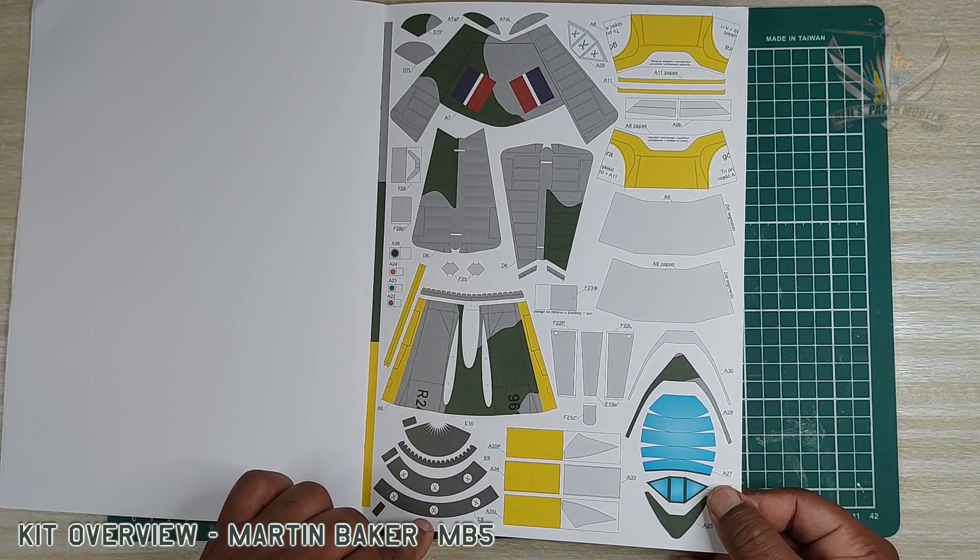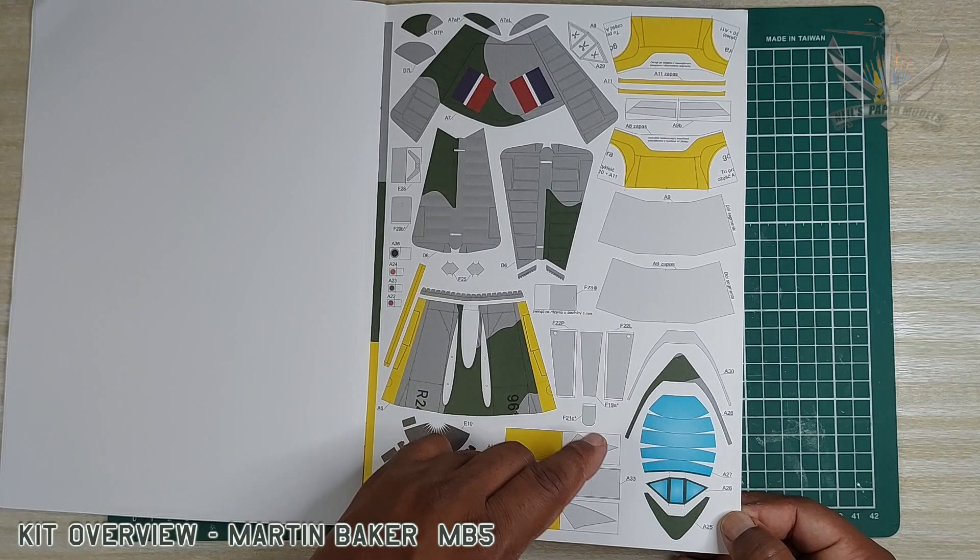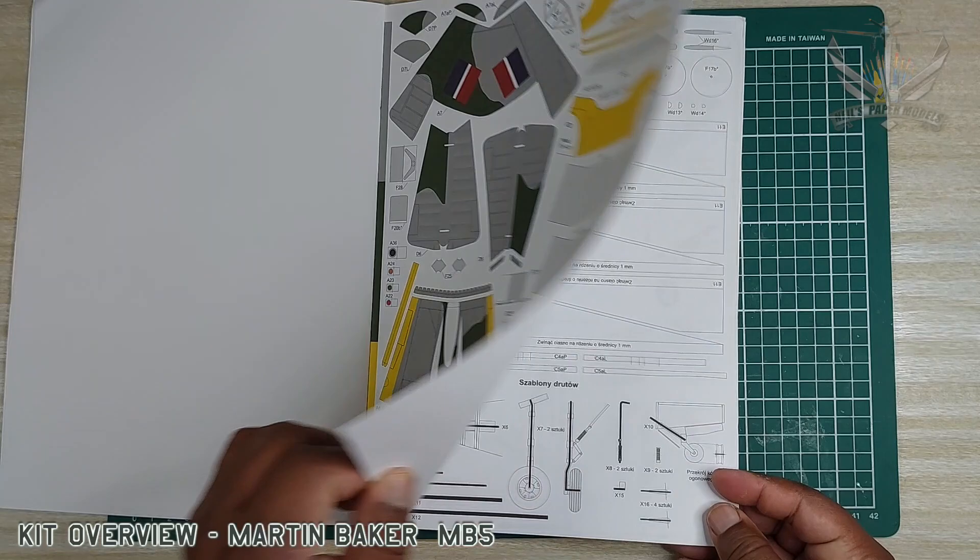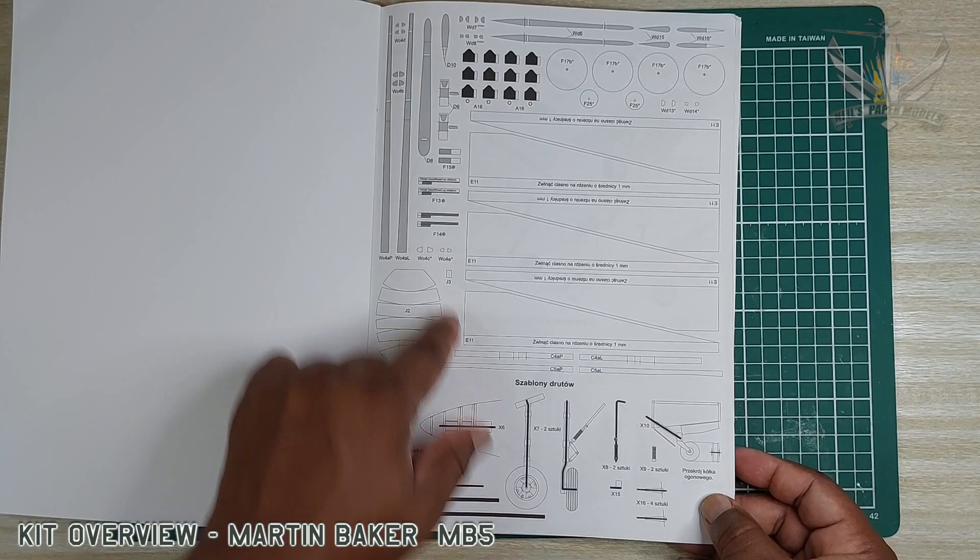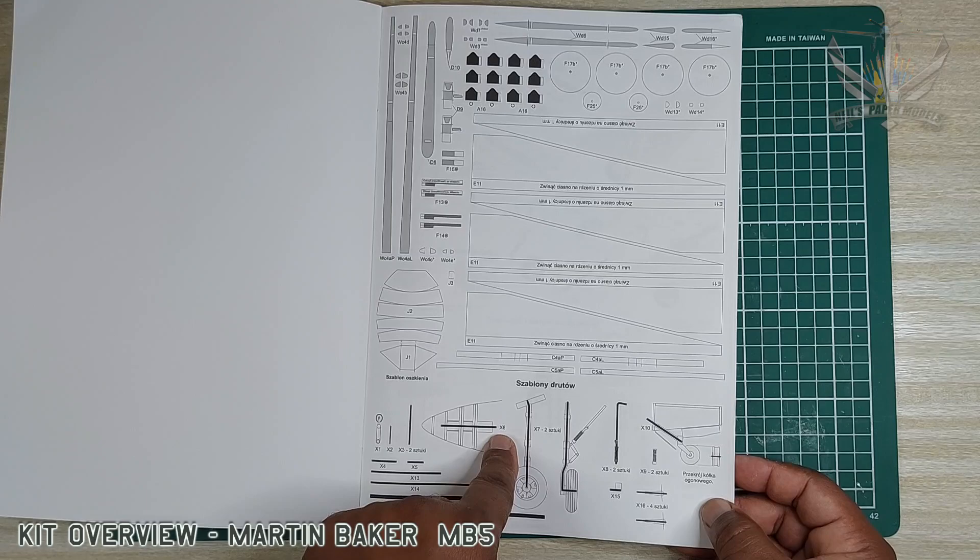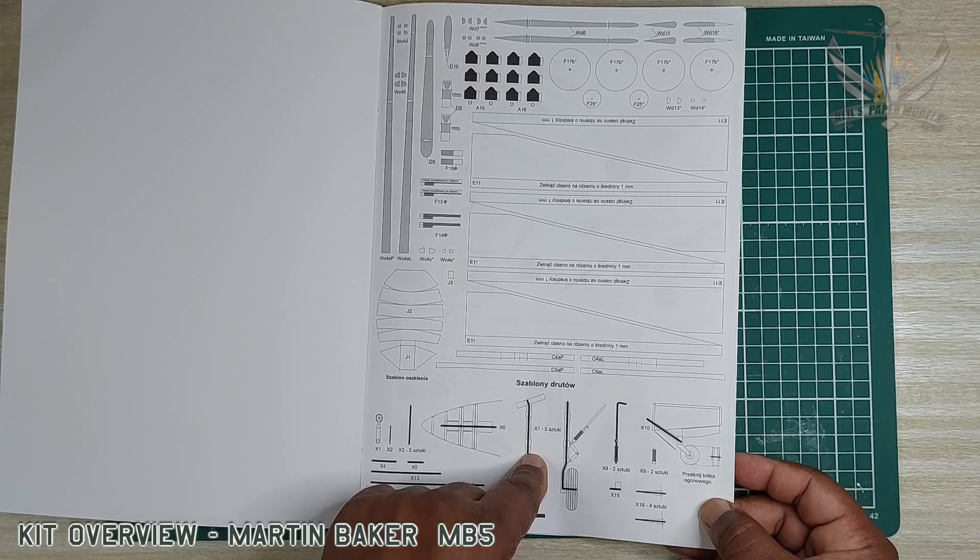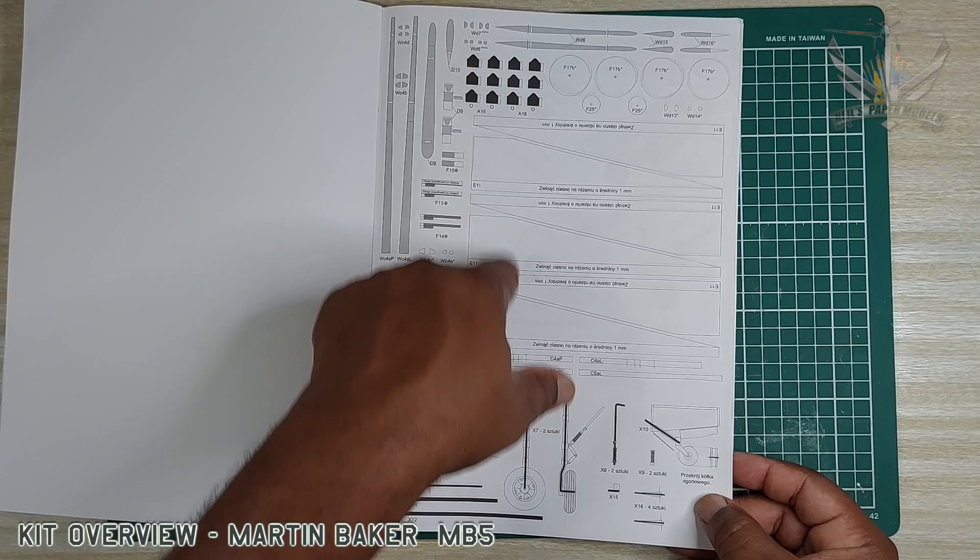Counter-rotating spinner, of course our canopy which we will form a mold for, and then we have the detail here. Instruction detail of how to put the spinner and integrate it onto the model. Landing gear detail instruction, and of course these are supposed to be reinforced by one millimeter strip.